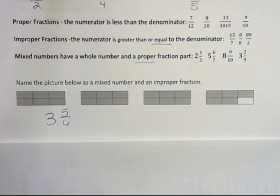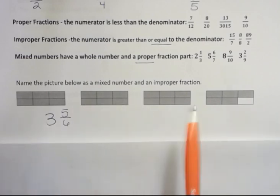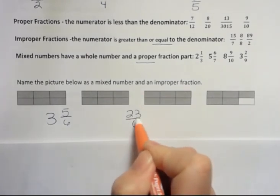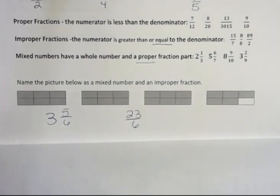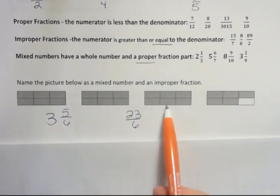What about as an improper fraction? Well, as an improper fraction, I'm dealing with 6. All of these have 6 parts, so my denominator is 6. How many of those do I have? 6, 12, 18, 19, 20, 21, 22, 23. That would be 23 sixths. Anytime you see a number on the top that's greater than the denominator, you know that you have more than one whole. So in this case, we have 3 wholes and some left over.